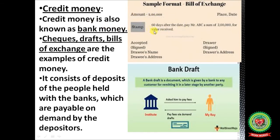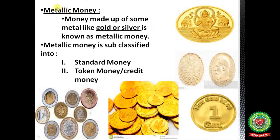A bill of exchange is a promise that states: '60 days after the date, pay Mr. ABC a sum of rupees 2 lakh for value received.' This is a promissory note deposited with banks. Metallic money is money made up of gold, silver, or any other cheaper metal. Metallic money is sub-classified into two categories: standard money — gold and silver — and token money, which is money made from cheap metals.